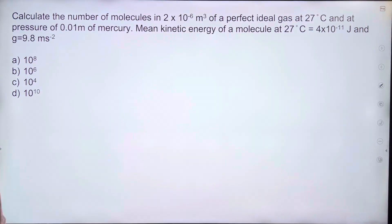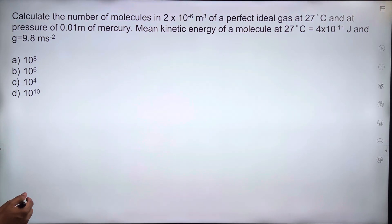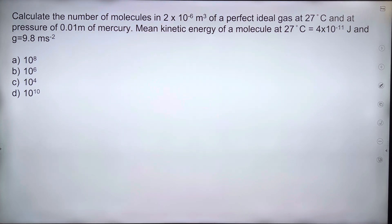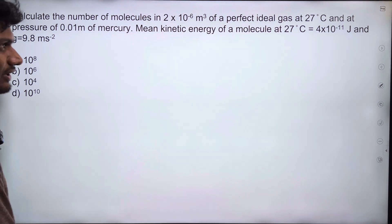The problem is: calculate the number of molecules in 2 × 10⁻⁶ m³ of a perfect gas at 27°C and a pressure of 0.01 meter of mercury. The mean kinetic energy of a molecule at 27°C is 4 × 10⁻⁷ J, and g is 9.8 m/s².